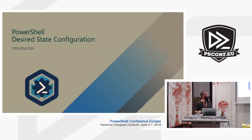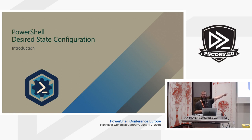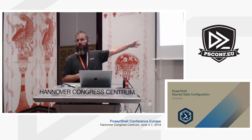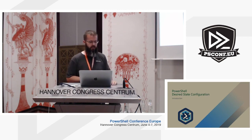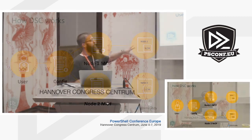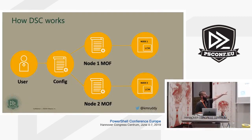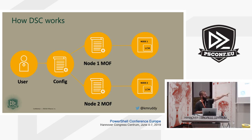Let's get into DSC itself. There's a community-based logo they're trying to create for DSC — there are six, seven, eight of them out there up for vote, so if you have an opinion go vote. How DSC works: we have our configuration file, a standard PowerShell .ps1 script. When you run that, you compile it and it creates MOFs — Managed Object Format. Each MOF is sent to the nodes, and on each node there's an LCM, or Local Configuration Manager, that takes that configuration and produces all the results.